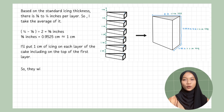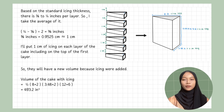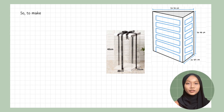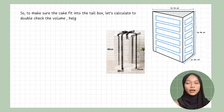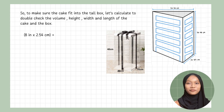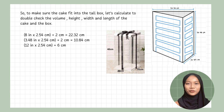Volume of cake with icing: one-half times (8 plus 2) times (3.48 plus 2) times (12 plus 2). To make sure the cake fits into the box, let's double-check the dimensions of the cake versus the box. Length: 8 inches times 2.54 plus 2cm equals 22.32cm. Width: 3.48 inches times 2.54 plus 2cm equals 10.84cm. Height of cake: 12 inches times 2.54cm plus 6cm equals 36.48cm. The dimensions of the cake are all less than the dimensions of the cake box, so the cake fits.